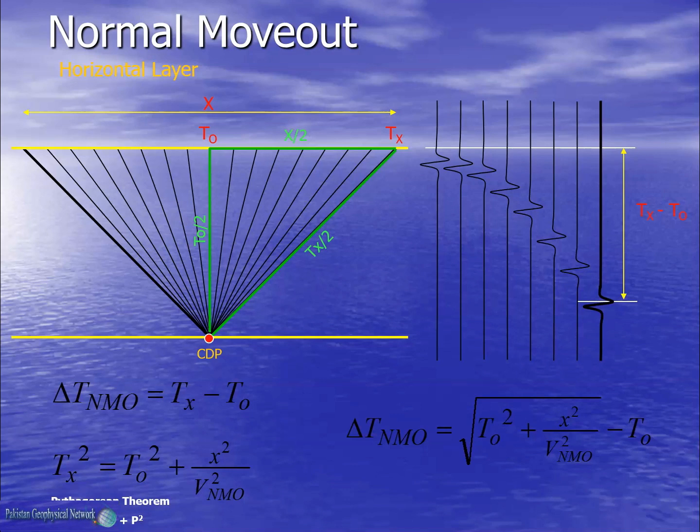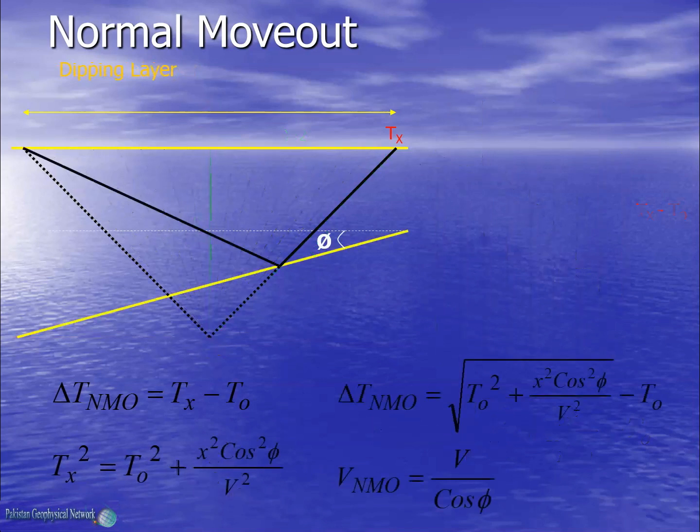Here X is the offset and VNMO is the NMO velocity. If the layer has a dip phi, then the NMO velocity is substituted with the apparent velocity V divided by the cosine of the dip phi.